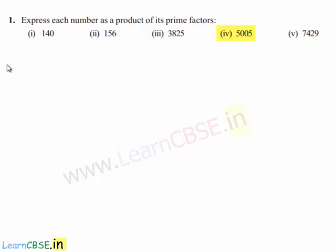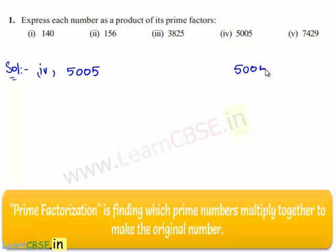Now, let us move on to the fourth bit in the question. The fourth number given is 5005. To express 5005 as a product of its prime factors, we shall factorize it. The least prime number that goes into 5005 is 5, so it can be expressed as 5 times 1001.